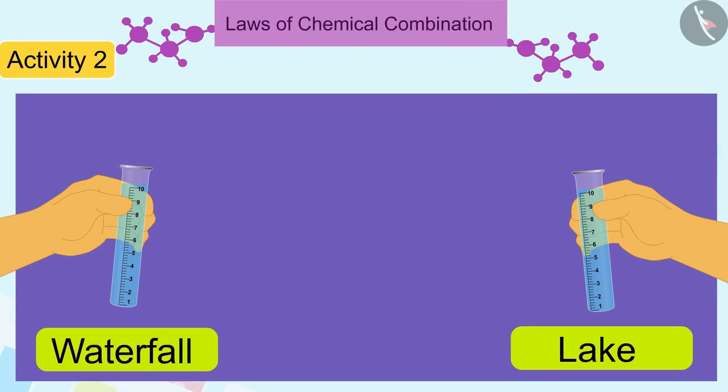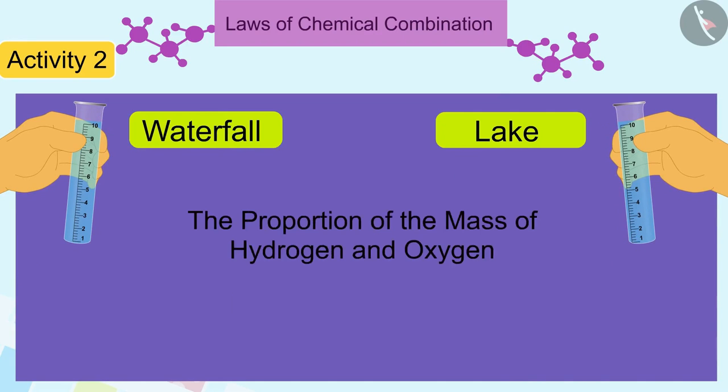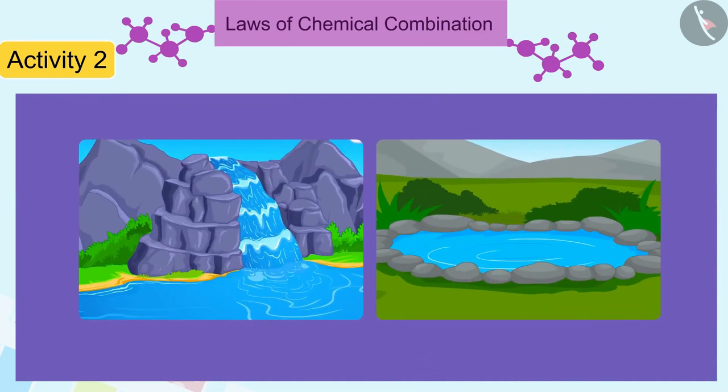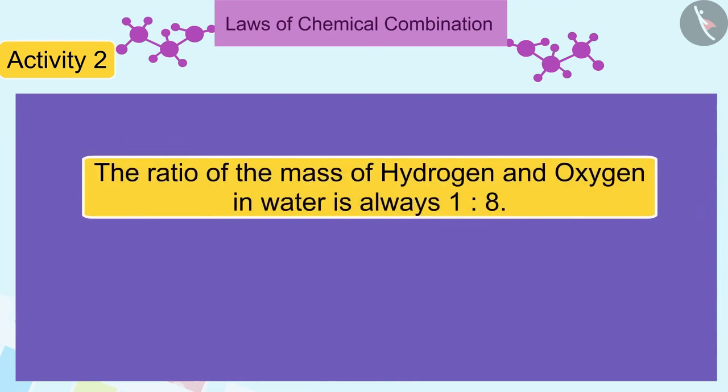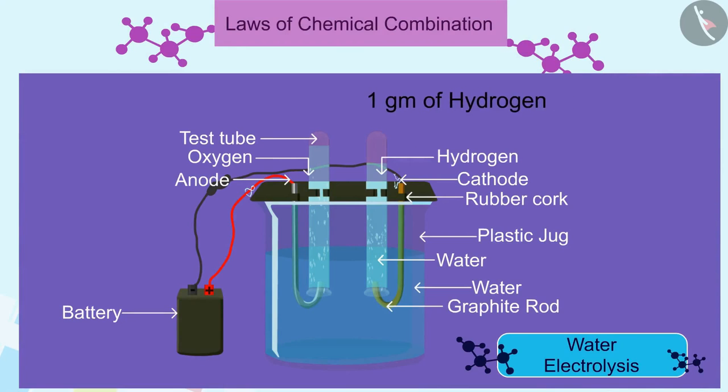Yes, it is same. You will find that the proportion of the mass of hydrogen and oxygen in the water of both the test tubes is 1 is to 8. Similarly, irrespective of the source of water, you will find that the ratio of the mass of hydrogen and oxygen in water is always 1 is to 8. Similarly, if you decompose 9 grams of water, 1 gram of hydrogen and 8 grams of oxygen will always be obtained.